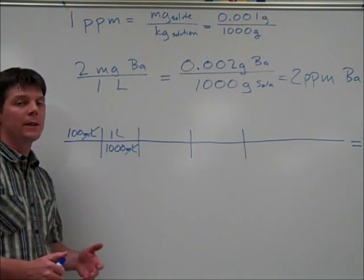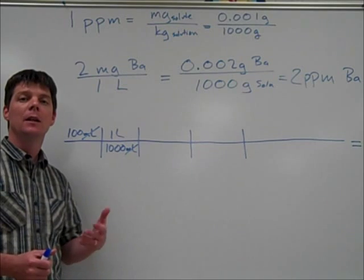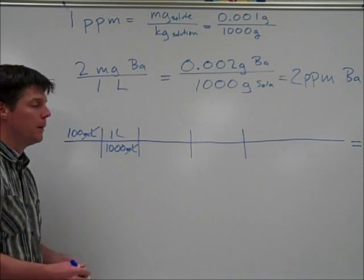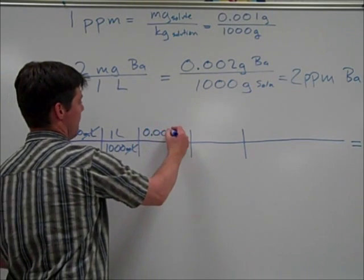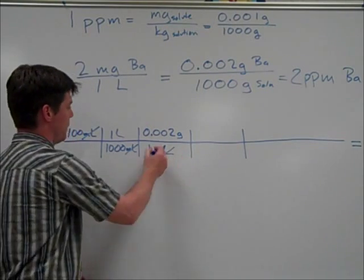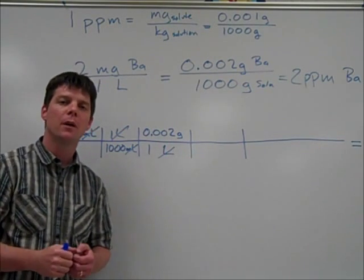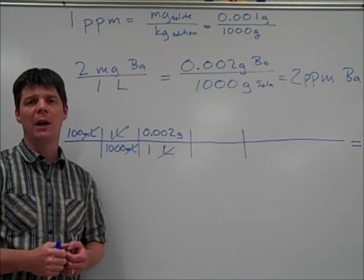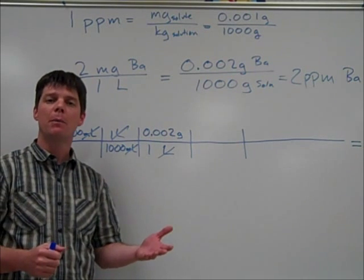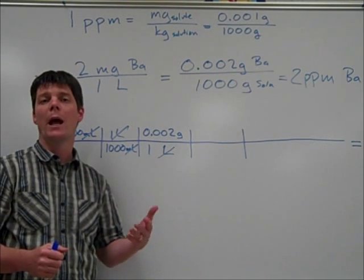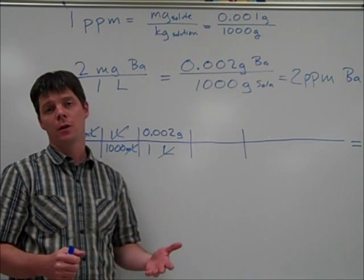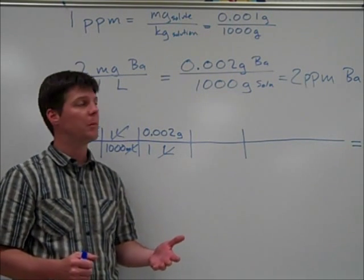In our next step, we're going to include information about the legal limit for barium. Now we've converted to how many grams of barium would be present in the sample. The next step is to convert this to a number of moles. To do that, we'll need to use the molar mass of barium.